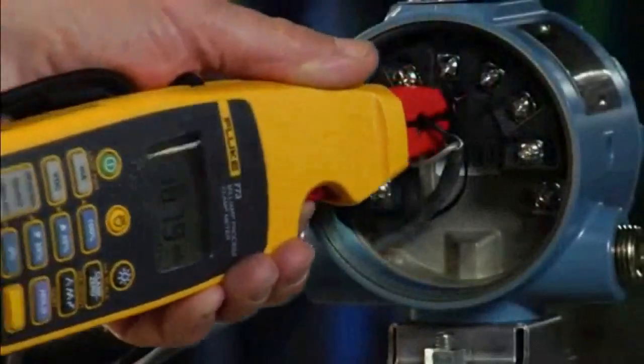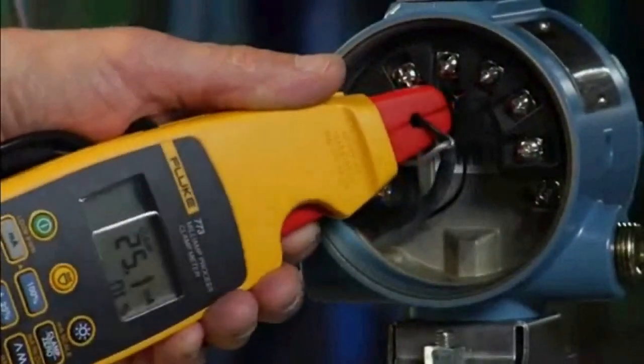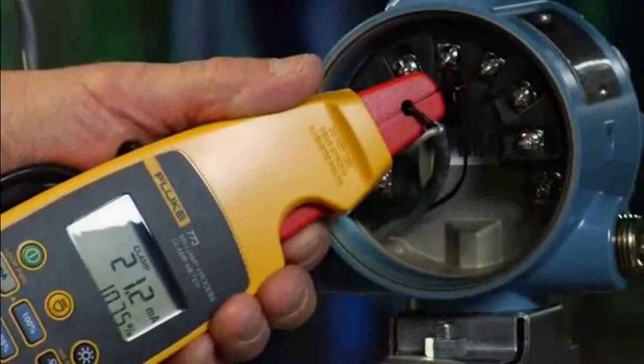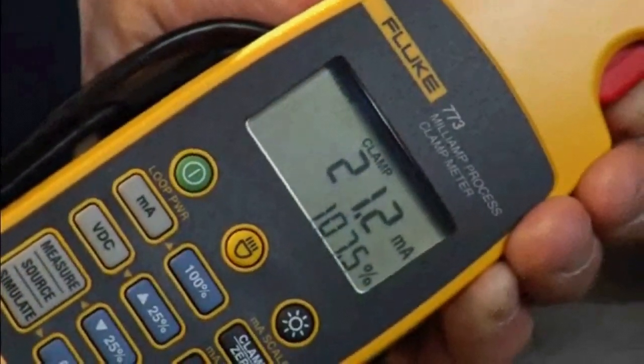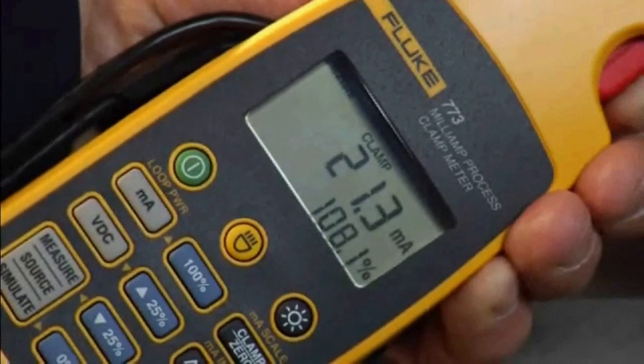First, clip the Fluke 773 onto one of the milliamp signal wires to make the measurement. An indication of 21 milliamp shows that, indeed, the loop is in alarm and that further troubleshooting is required.